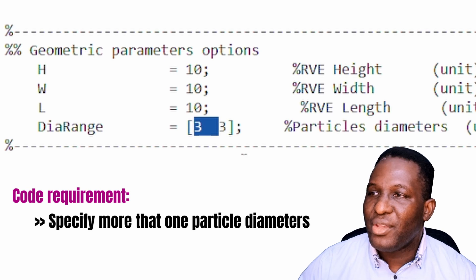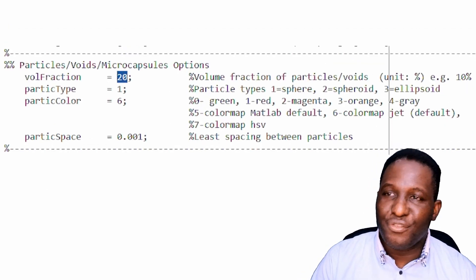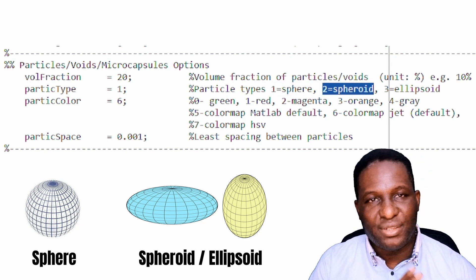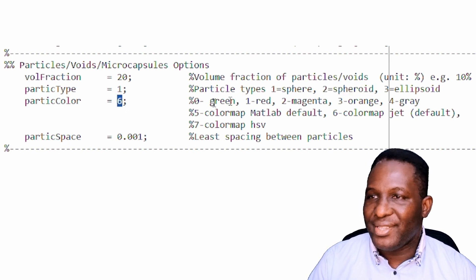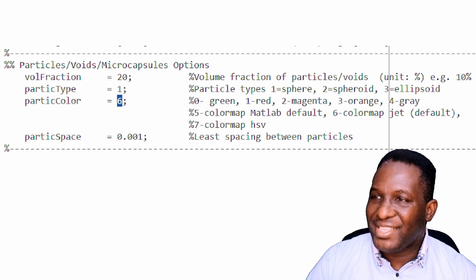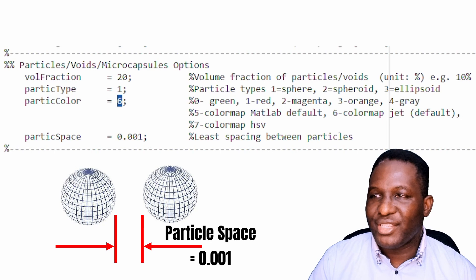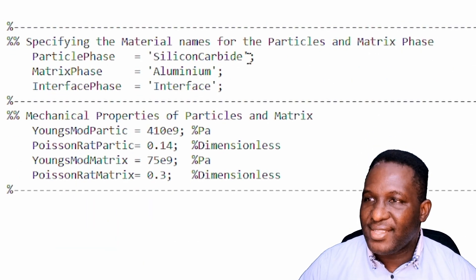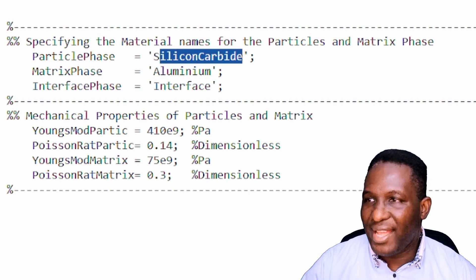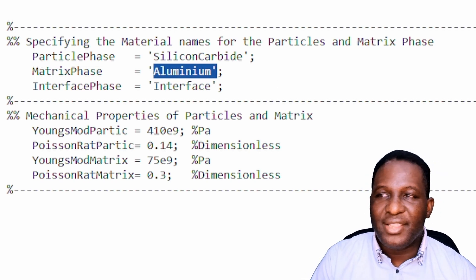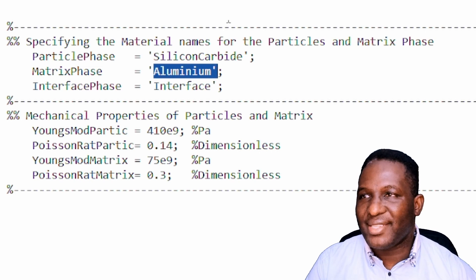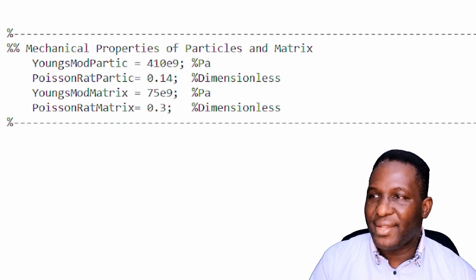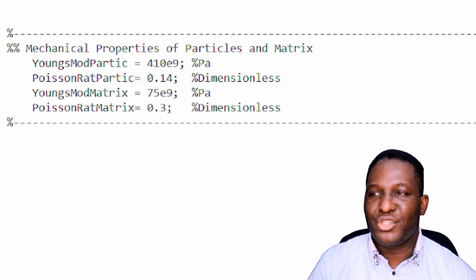The volume fraction we're going to work with is 20% for the particulate system. The particle type will be type 1, which means it's going to be a sphere, although there are options for generating spheroids and ellipsoids. The particle color will be 6, which is the default MATLAB particle display type. The minimum spacing between the closest particles will be a very small number to allow for adequate packing within the structure. The particle phase we're working with will be silicon carbide, and the matrix phase will be aluminium. We can also create interfaces but in this case we're not asking for an interface.